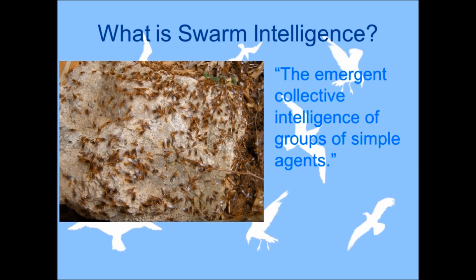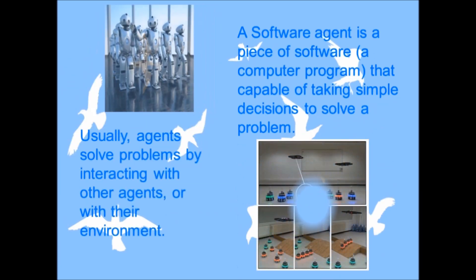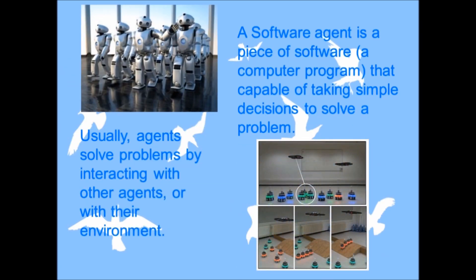By the word agents he refers to software and hardware agents. A software agent is a piece of software that is capable of taking simple decisions to solve a problem. Usually agents solve problems by interacting with other agents or with their environment. The same goes for hardware agents, which don't run inside a computer like software does, but run autonomously in our environment.